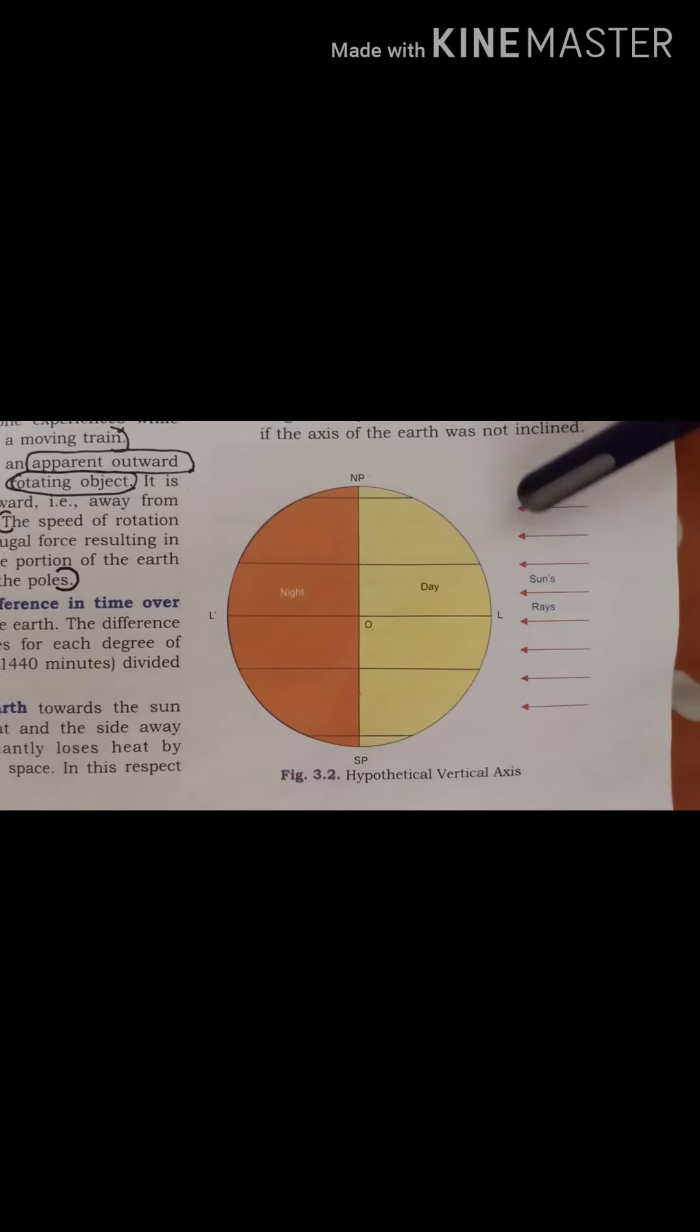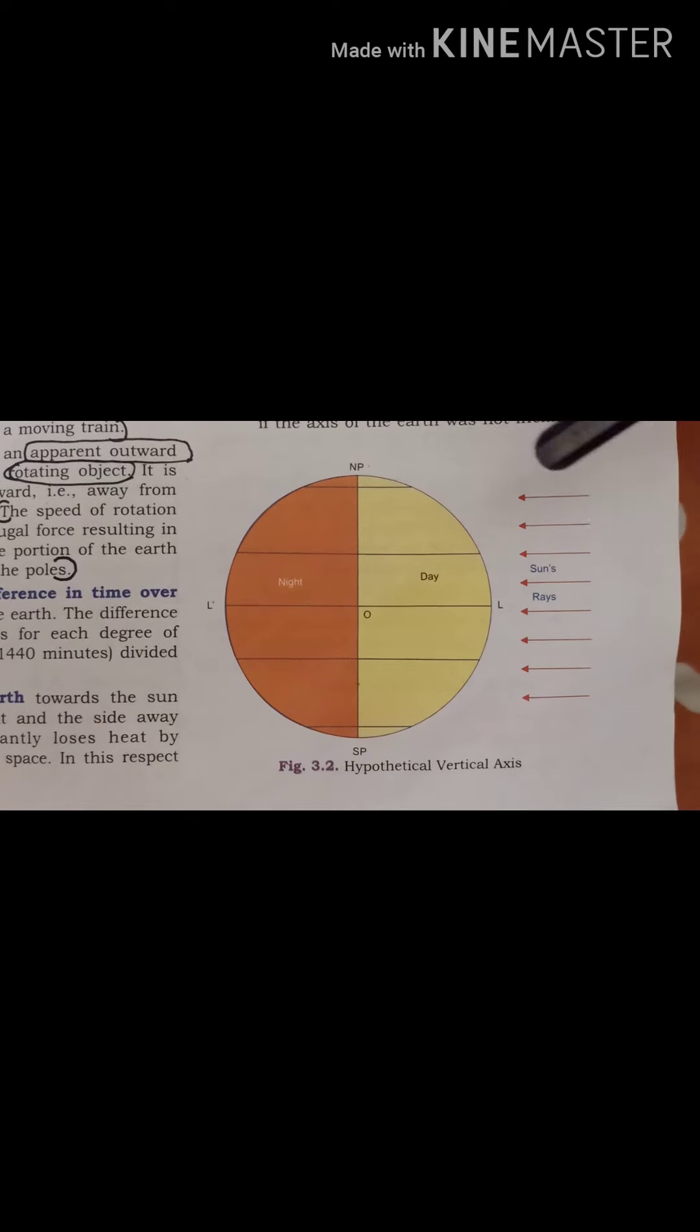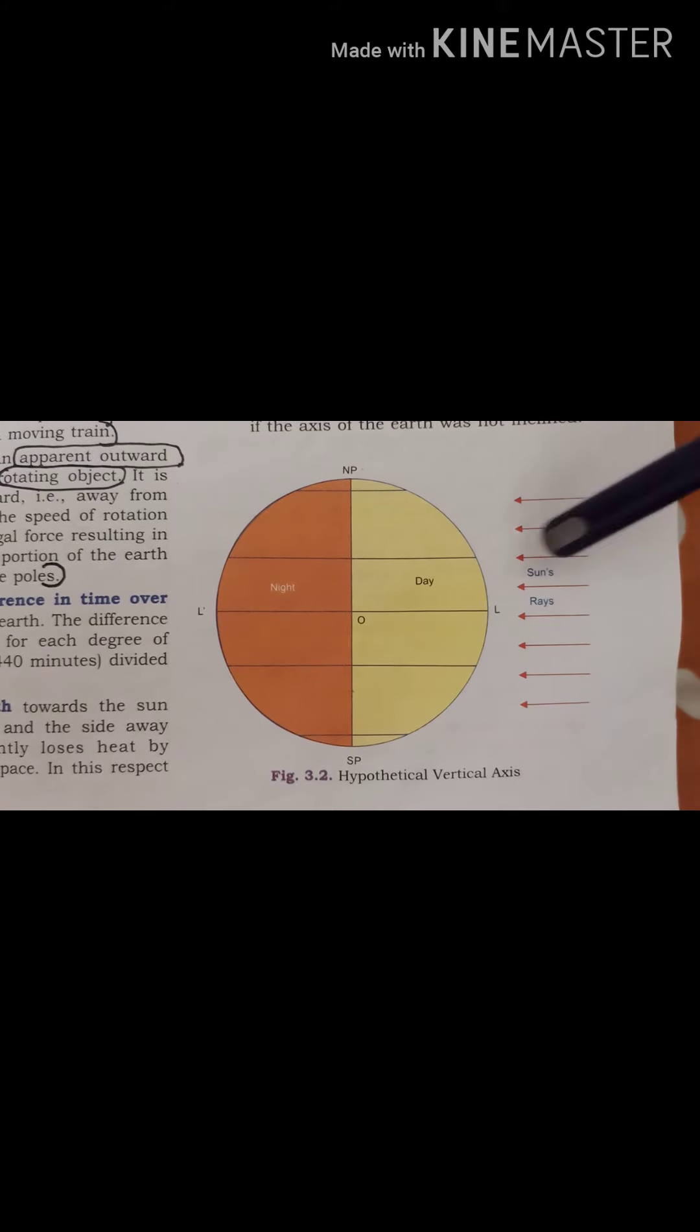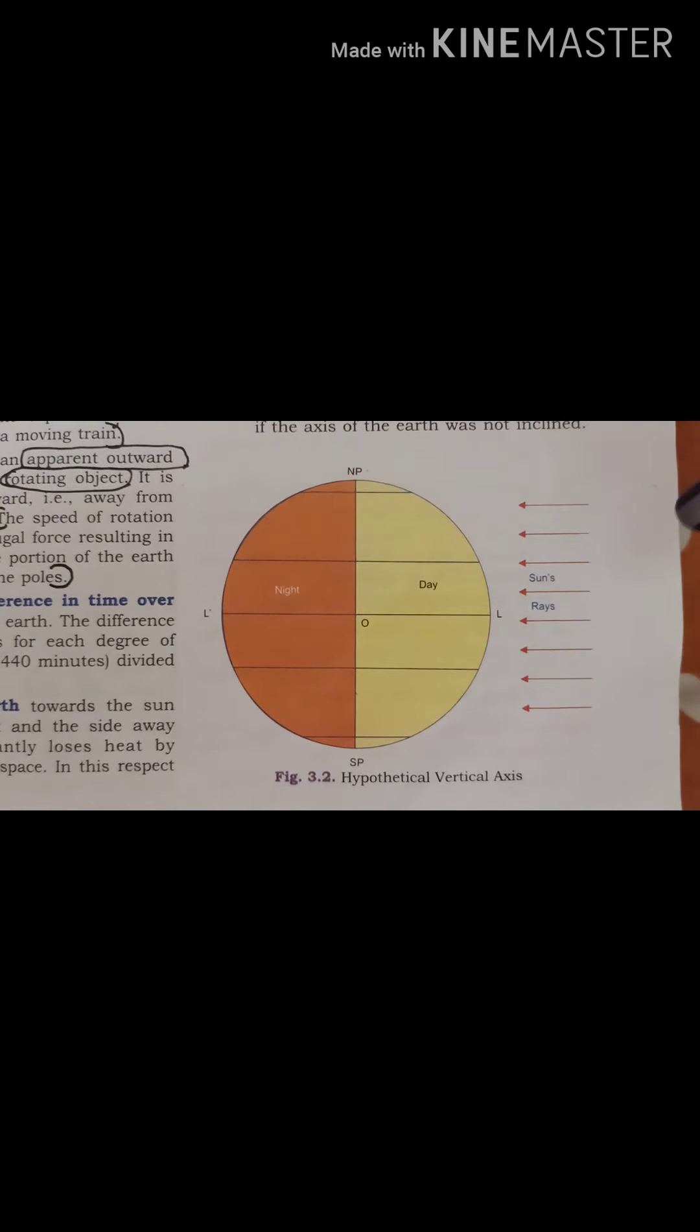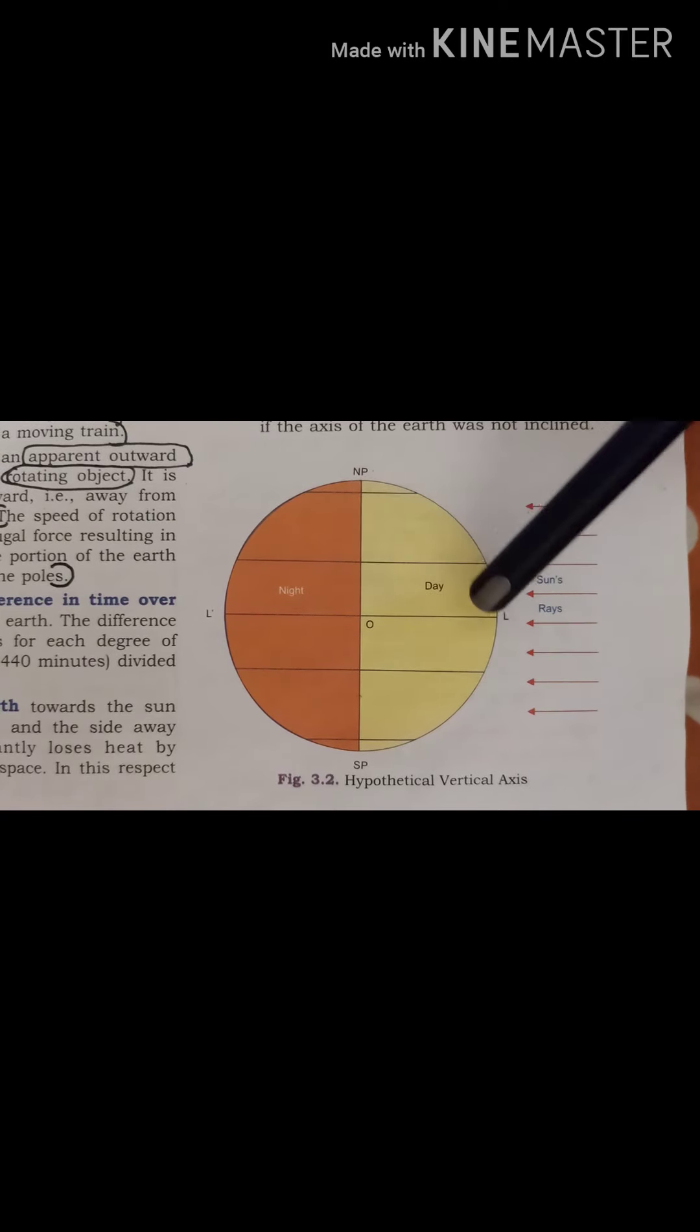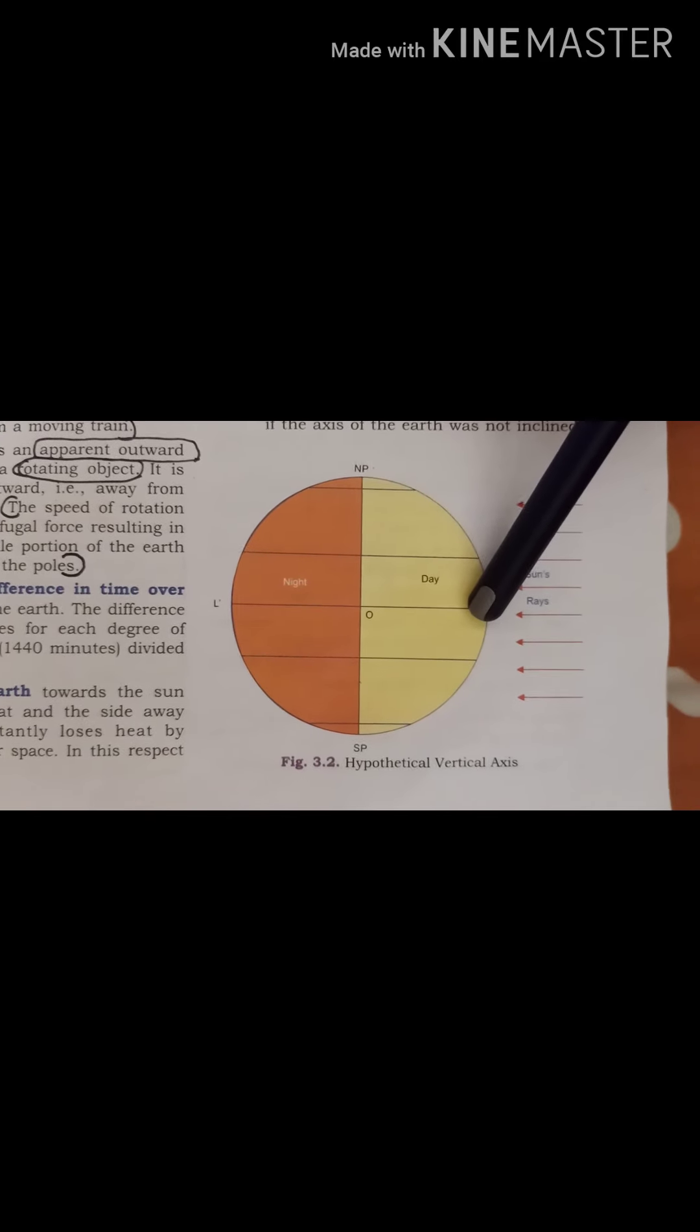Now I am going to explain about the impact of vertical axis on the length of the day and night. Here let us say if the axis of the earth was vertical then this place L located at equator would be at position L1 after exactly 12 hours. The distance of OL and OL1 is almost equal.